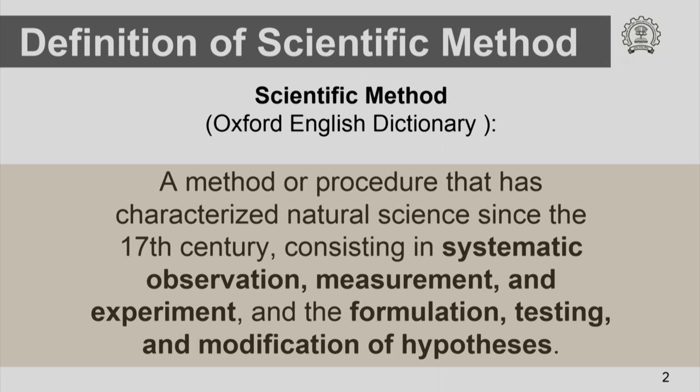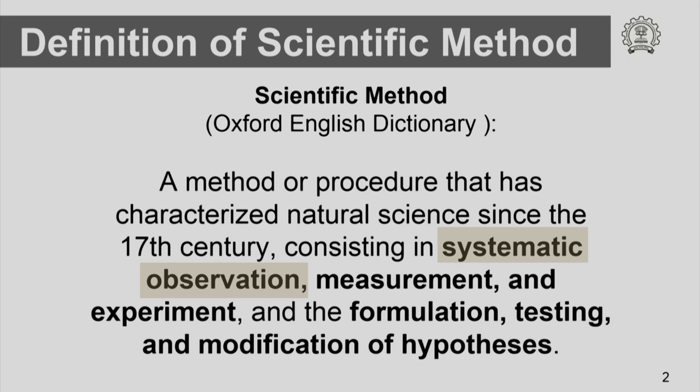Let us go back and look at the words that have been highlighted. The first set of highlighted words are systematic observations, measurement and experiment. One of the prime components of the scientific method is experiment, and these experiments involve systematic observations or systematic measurements of certain phenomena.